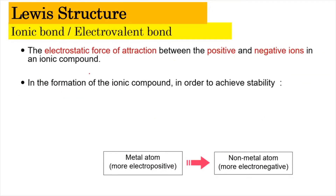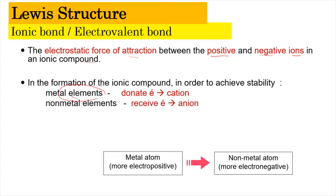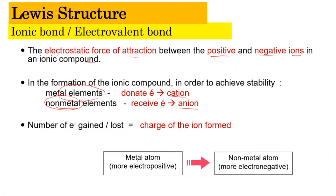Ionic bond consists of the electrostatic force of attraction between the positively and negatively charged ions in an ionic compound. In the formation of the ionic compound, we need a metal element as well as a non-metal element. The metal element will act as the electron-donating group, donating electrons to form a cation. Meanwhile, the non-metal will receive electrons to form an anion. So it is a transfer from a more electropositive atom to the more electronegative atom.